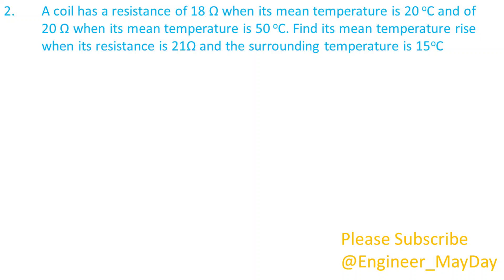Here is a second question. A coil has a resistance of 18 ohms when its mean temperature is 20 degrees Celsius and of 20 ohms when its mean temperature is 50 degrees Celsius. Find its mean temperature rise when its resistance is 21 ohms and the surrounding temperature is 15 degrees Celsius.